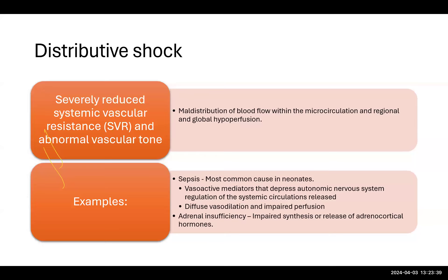Distributive shock involves reduced systemic vascular resistance and abnormal vascular tone, with maldistribution of blood flow within the microcirculation resulting in hypoperfusion. With sepsis, vasoactive mediators depress the autonomic nervous system, affecting systemic circulation and causing diffuse vasodilation. The baby looks warm but tissue perfusion is compromised. Not infrequently, these babies also have relative adrenal insufficiency due to prematurity or the inflammatory cascade, leading to impaired adrenocortical hormone release, further affecting vasomotor tone and causing distributive shock.